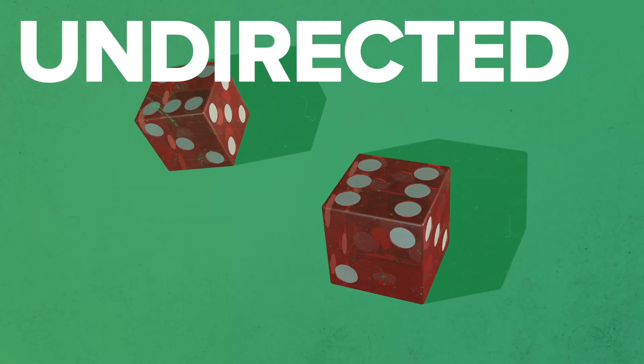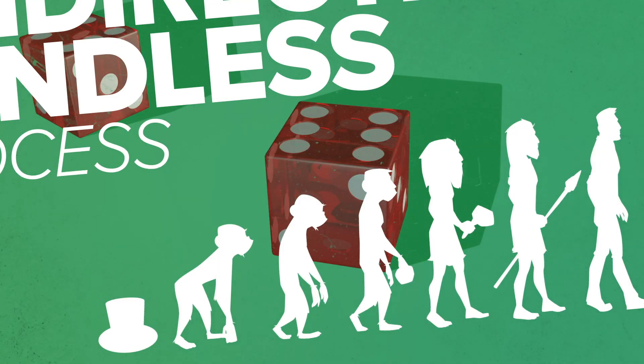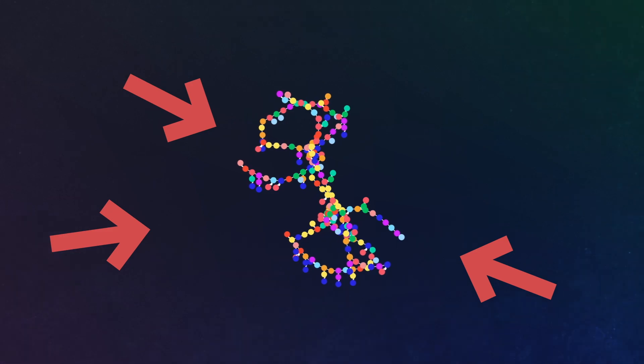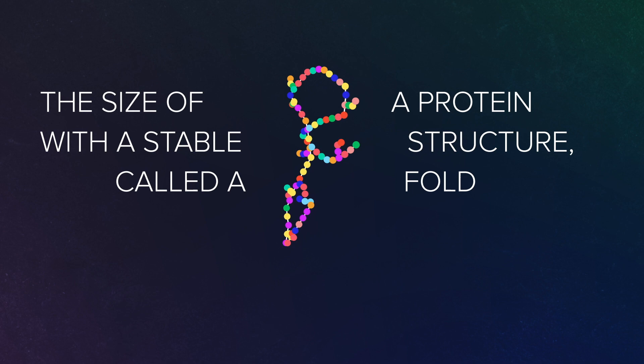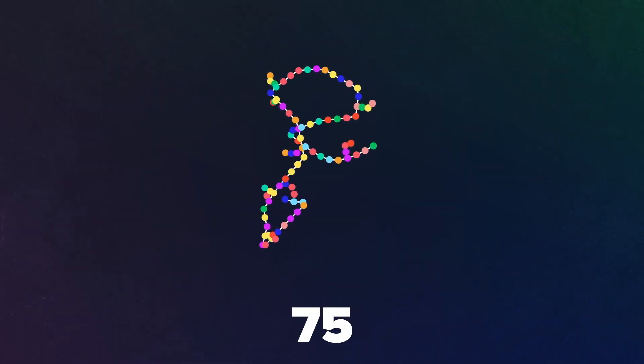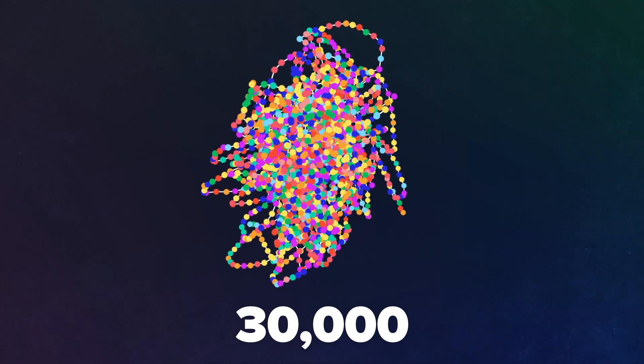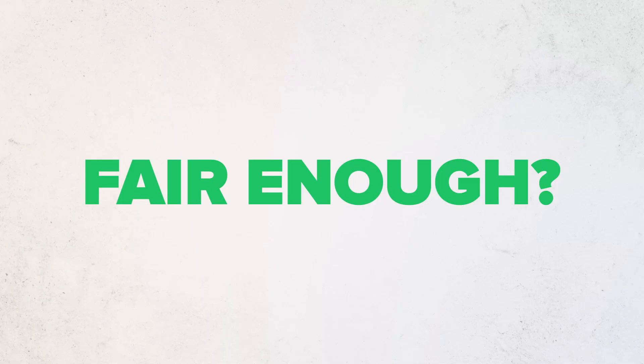What are the odds that an undirected, mindless process like evolution could produce just one single protein molecule fit for life? Let's keep it simple. The size of a protein with a stable structure, called a fold, ranges between about 75 and 30,000 amino acids. Let's just take a small number like 150.